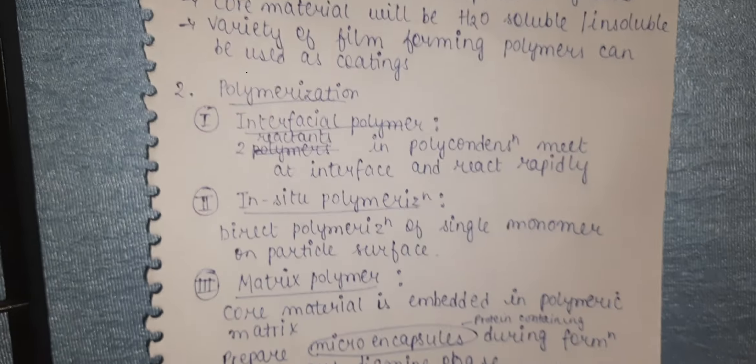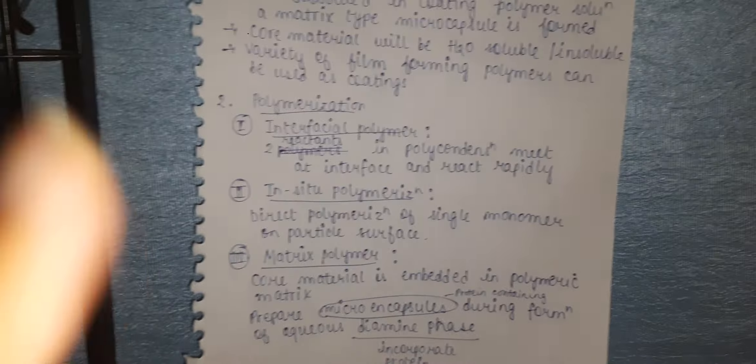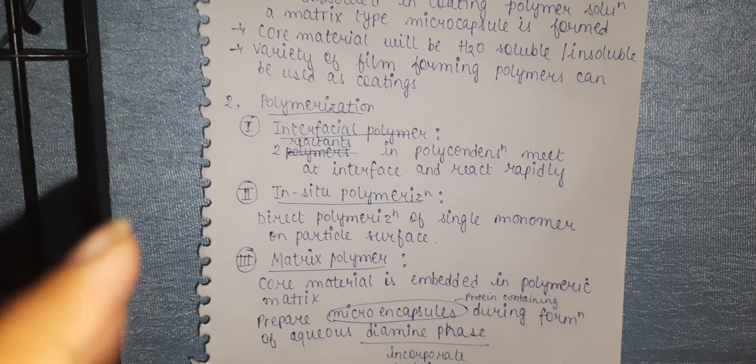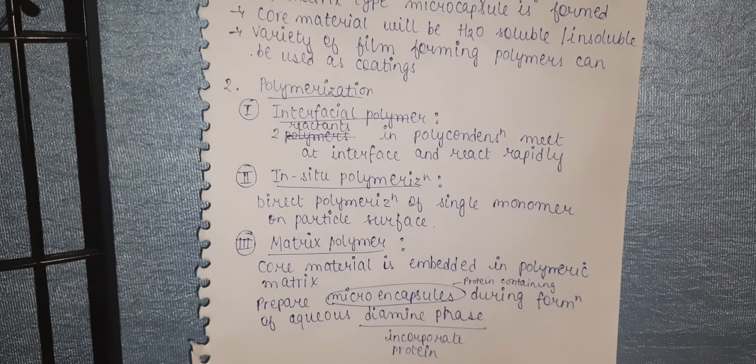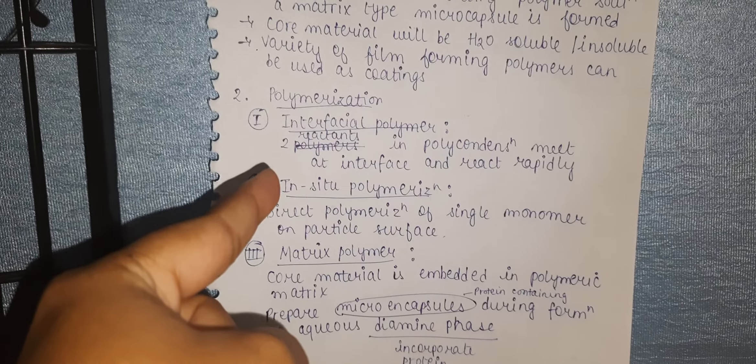Now, moving on to polymerization. Polymerization has three types: first is interfacial polymerization, another is in-situ polymerization, and the third is matrix polymerization.